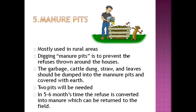The manure pit method, commonly seen in villages, involves two pits. Cow dung, leaves, and other waste are added to one pit while the other remains empty. After four to six months, when the first pit is complete, it is covered and waste is then added to the second pit. We wait for four to six months for the first pit to become proper manure for agricultural use. There must always be two pits in use alternately.